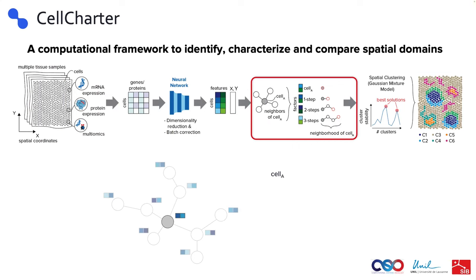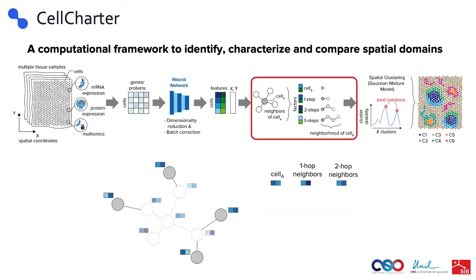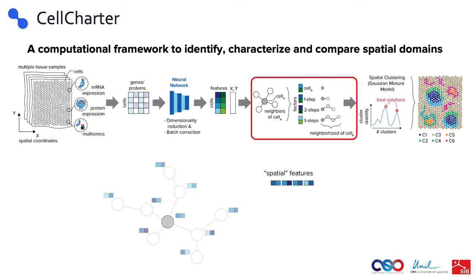To do that, we encode cells in the spatial omics experiment as a network, with cells connected if they are in spatial proximity — and this applies to spots in technologies without single-cell resolution as well. For every cell, we take the feature vector of the cell, move to the first-hop neighbors at distance one, take their features, aggregate them — for example by taking the mean — and concatenate with the previous vector. Then we move to the two-hop neighbors, take the mean of their features, and concatenate again. We repeat this until we reach a certain distance L, usually around 3-4 hops, and the final features are the concatenation of these vectors.